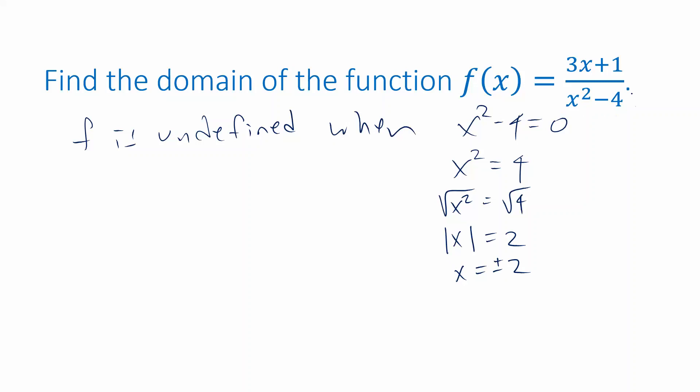So when x is plus or minus 2, x squared minus 4 is 0. But those are the things that we cannot plug in. That's when the function is undefined. So the domain is everything else. The domain is, let's express this one in words, all x except 2 and negative 2.